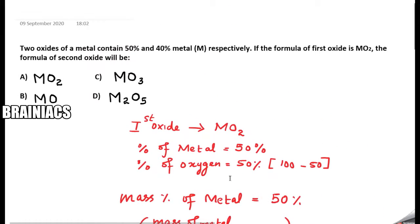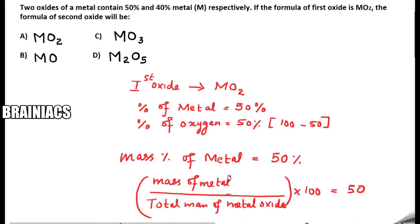I can see that option MO₃ is present as option C, so option C is my correct answer. I hope you understood the concept. If you have any doubt, get back to us. You can subscribe or contact Brainiacs Classes for more videos of similar nature. Thank you.